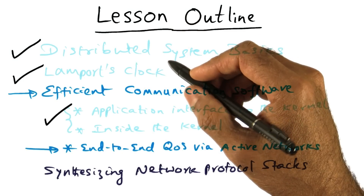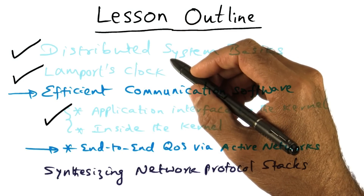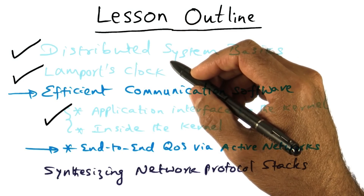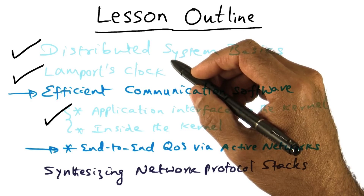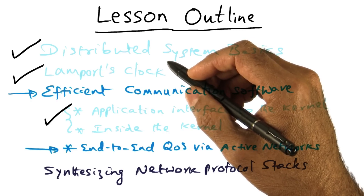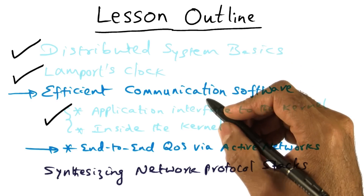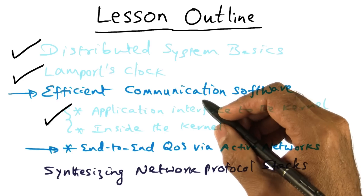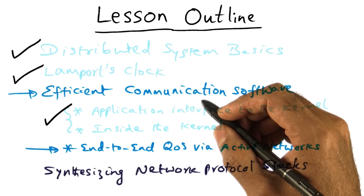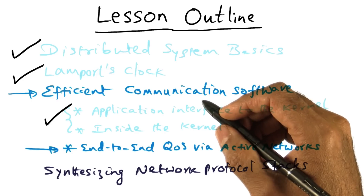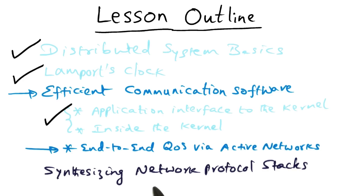Thus far in the course, we've been focusing on specializing operating system services for a single processor, or a multi-core, or a parallel system, or a local area network. In this lesson, we will take this idea of specializing to the wide area network. Specifically, we will study the idea of providing quality of service for network communication in an operating system by making the network active.